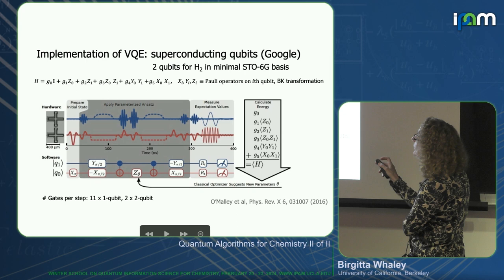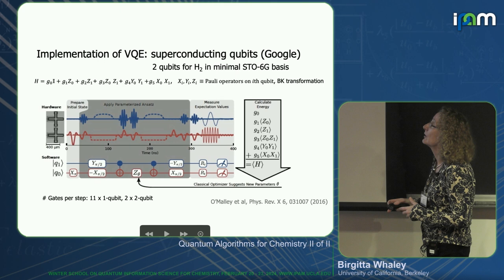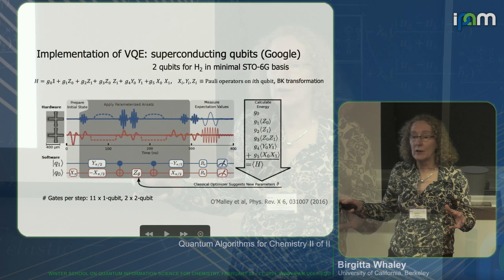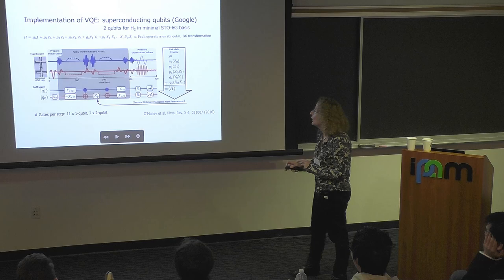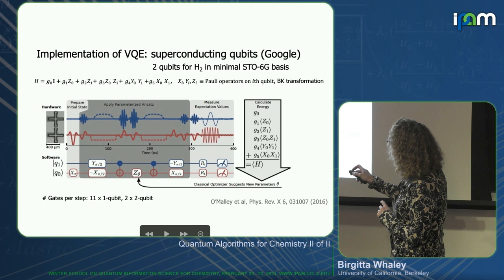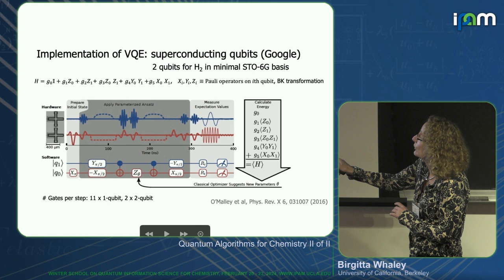In the VQE, they don't have any controlled unitaries anymore — you've replaced the controlled unitaries of quantum phase estimation by just preparing a state and measuring expectation values of the Hamiltonian elements. They just prepare the state, then this circuit prepares the ansatz state, and they make rotations to go into the right basis to measure the six terms that contribute to the Hamiltonian.